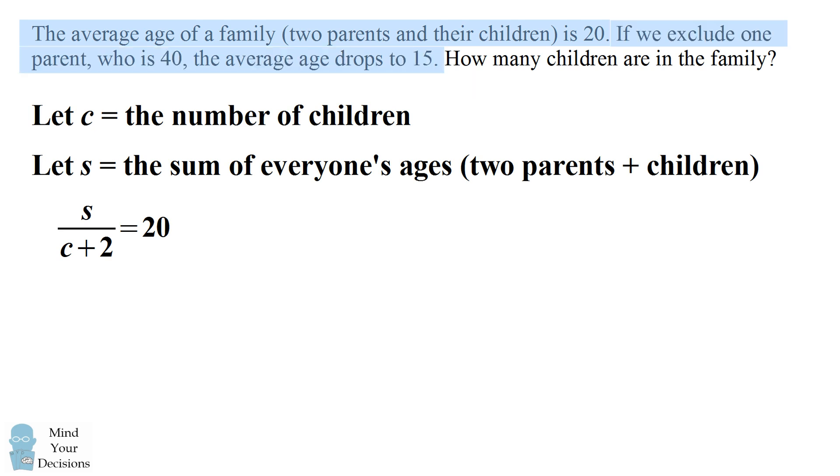The next condition is if we exclude one parent aged 40, the average drops to 15. So from this fraction, we're going to remove 40 from the numerator, and we're going to remove one observation, one individual, from the denominator. So we get s minus 40 divided by c plus 1 equal the average of 15.